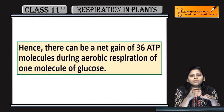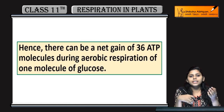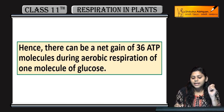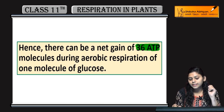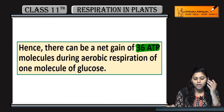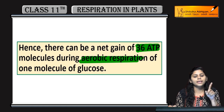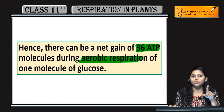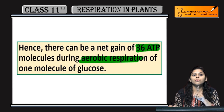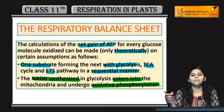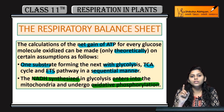Jo bhi hain, humne jo glucose ki oxidation dekhi, humne usse pata laga ki jo reactions hain woh sequence mein hote hain. Inse net gain hota hai 36 ATP molecules ka during aerobic respiration. Jab ek molecule of glucose oxidize hota hai, to 36 molecules of ATP produce hote hain. Yeh tha respiratory balance sheet when one glucose molecule is oxidized.